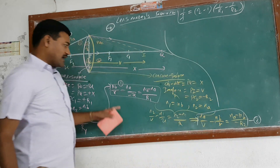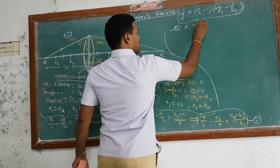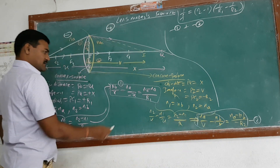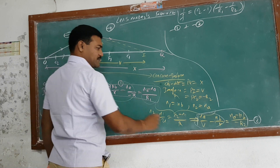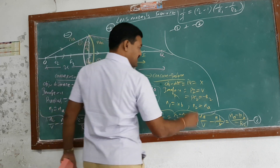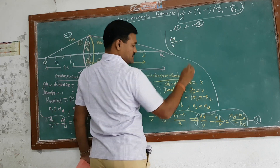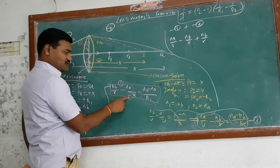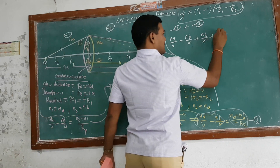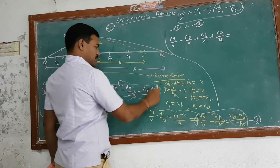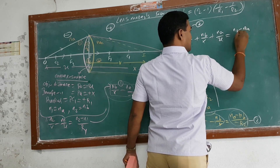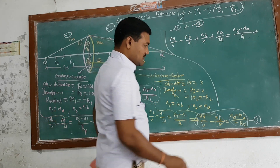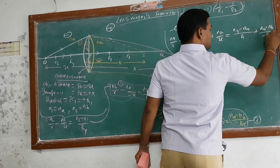Now I will add Equation 1 and Equation 2. On the left-hand side, the −NB/X and +NB/X terms cancel. On the right-hand side I get: (NB − NA)/R1 + (NA − NB)/(−R2). So the result is: NA/V + NA/U = (NB − NA)(1/R1 + 1/R2).